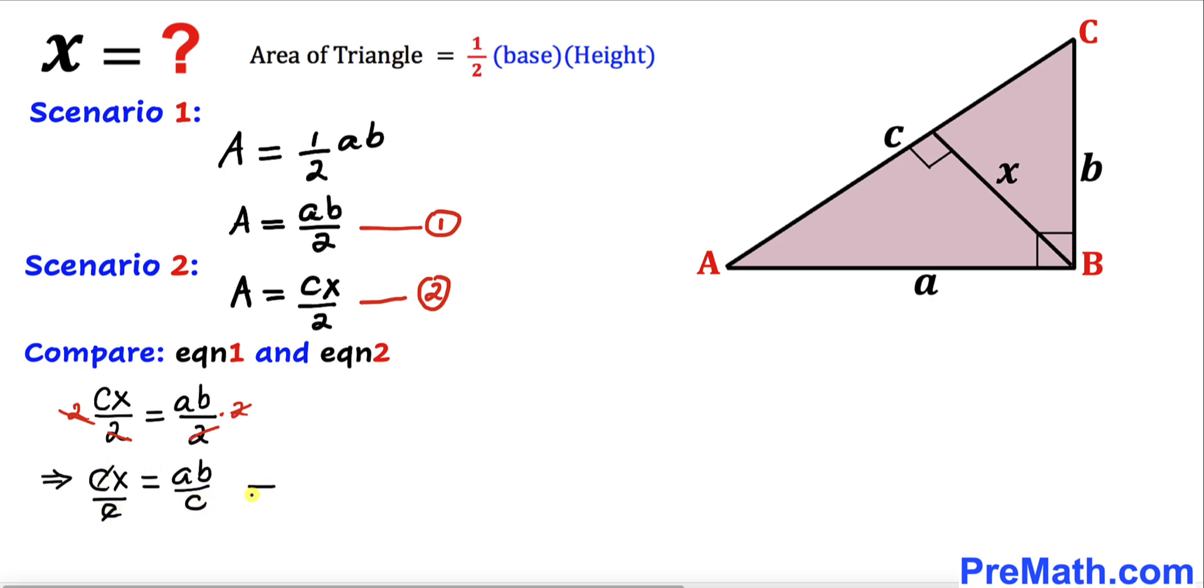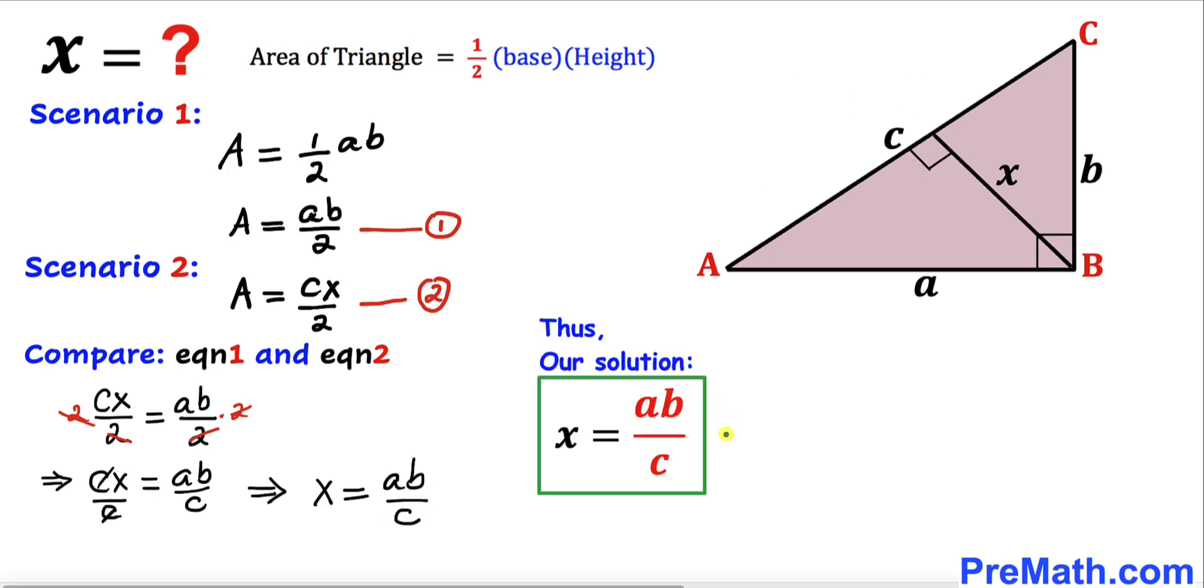So that means our X value turns out to be A times B divided by C. Thus, our solution is X equals A times B divided by C.